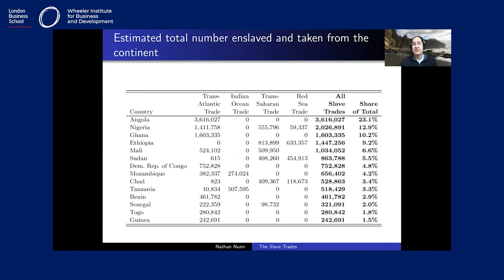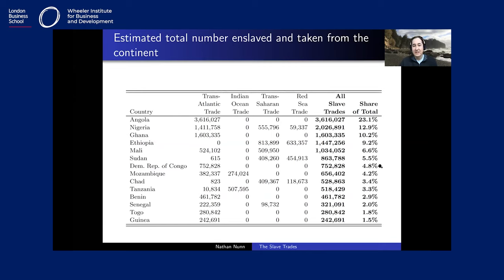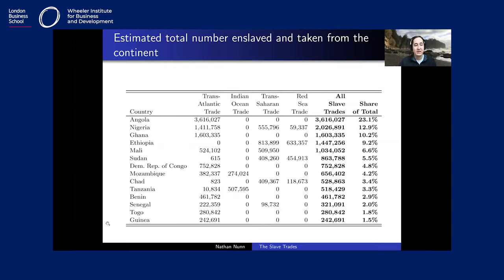These estimates are listed for all countries. Angola had a large number enslaved primarily during the transatlantic slave trade; Nigeria during the transatlantic but also the trans-Saharan, with many individuals shipped north and to the Red Sea; places like Ethiopia experienced primarily the trans-Saharan and Red Sea slave trades.